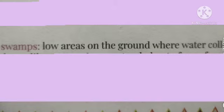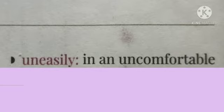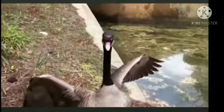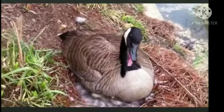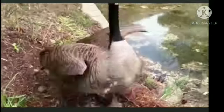Low areas on the ground where water collects when it rains — water collects at the lower points, that is called a swamp. 'Uneasily' means in an uncomfortable manner. Look at this — the swan is feeling uncomfortable, that is uneasiness.